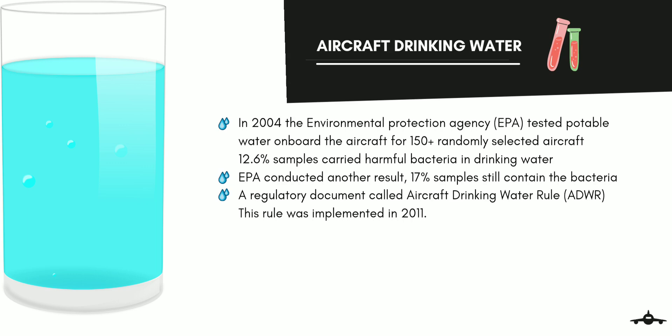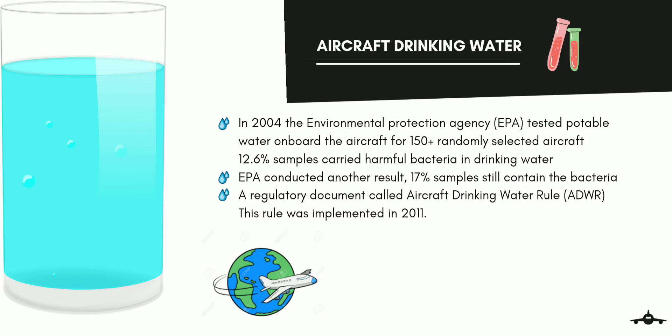This prompted the EPA to regulate aircraft drinking water for the public. The EPA developed a regulatory document called the Aircraft Drinking Water Rule, which was implemented in 2011. The main problem in maintaining aircraft drinking water quality is that aircraft travel to so many different destinations, and the portable water is replenished at all these different locations by different ground handling companies.